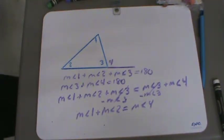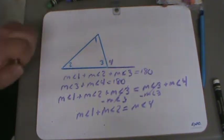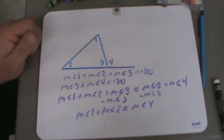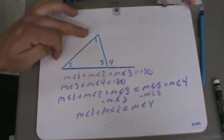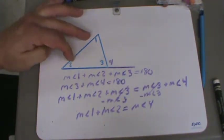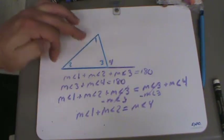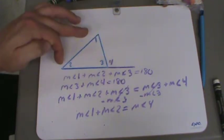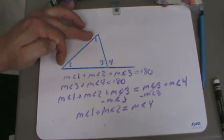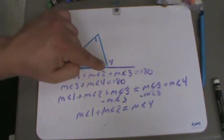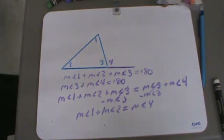There is a name for these two angles that are opposite of that exterior angle — they're called the remote interior angles. Remote means far away; they're far away from that angle. Those two remote interior angles, when added together, are going to give you that exterior angle.